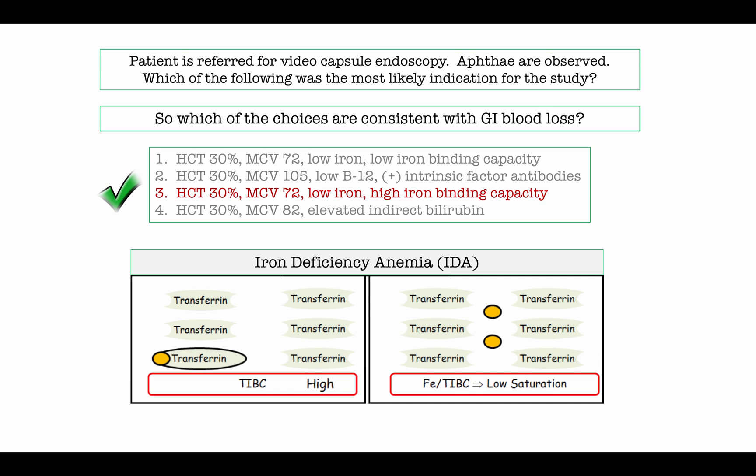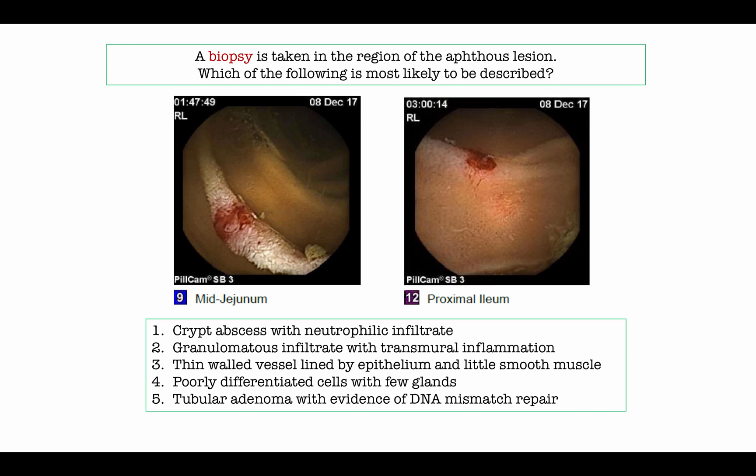With iron deficiency anemia, you have lots of transferrin just waiting to transport iron — a high iron binding capacity. Depicted is also the classic low iron saturation, which is simply a calculation of iron divided by iron binding capacity. Students often struggle with interpreting iron studies, so it's worth working through carefully.